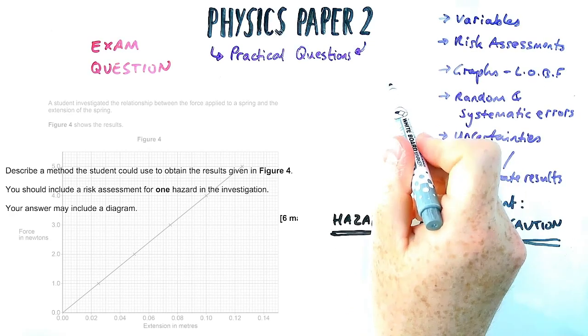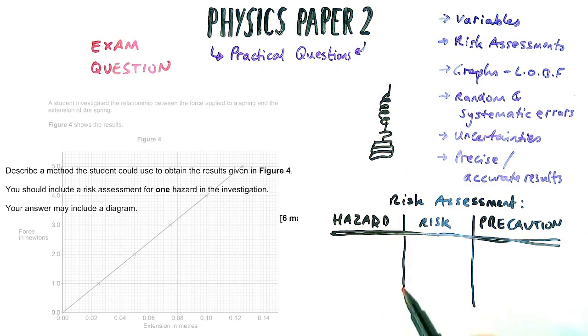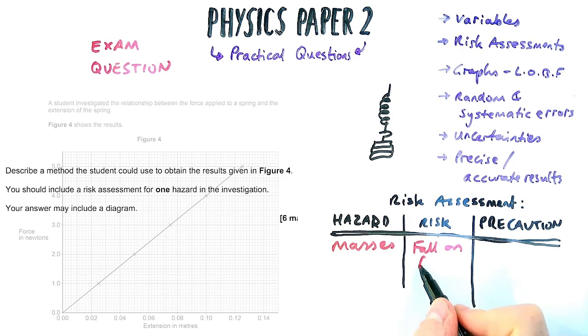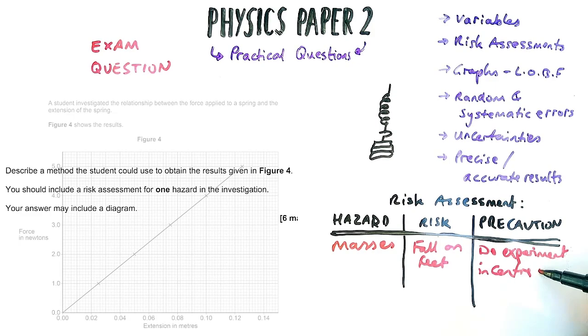And this question is about the Hooke's Law practical with springs and masses, and it says you should include a risk assessment for one hazard. So I'm going to have a couple to work with here. One of them is that the masses and the risk is they could fall on your feet, so what we do is you do the experiment in the centre of the table, or do it away from the edge of the table. Another example of risk assessment, again not using the phrases be careful, we've got to say what is actually going to happen and what do we do about it.